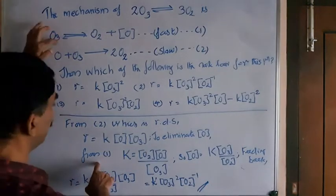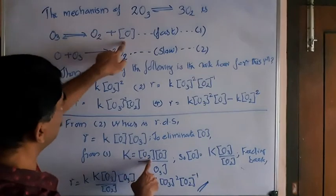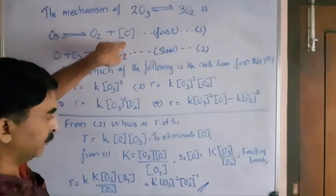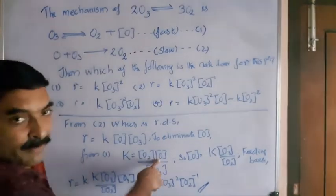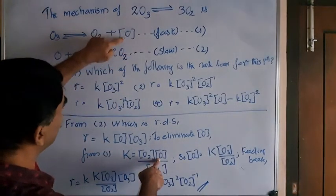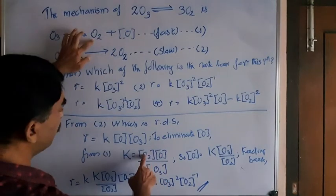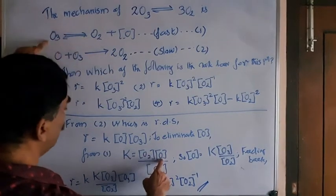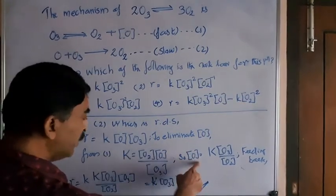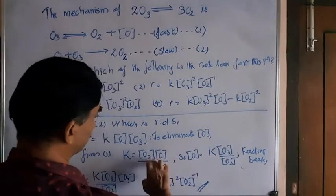Look here, from equation 1, equilibrium constant capital K is equal to square bracket O2 into square bracket O. This square bracket stands for nascent oxygen. Whereas now we use the same as concentration square bracket. This square bracket has two different meanings. Here it is suggesting highly reactive unstable. Here it is concentration. So, square bracket O2 into square bracket O divided by square bracket O3. In that case, square bracket O is equal to cross multiply K into square bracket O3 by O2 from this.